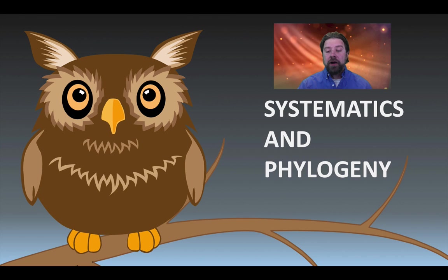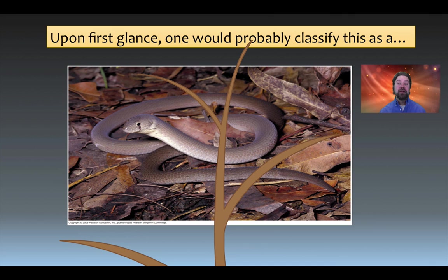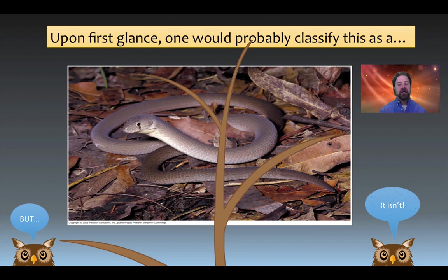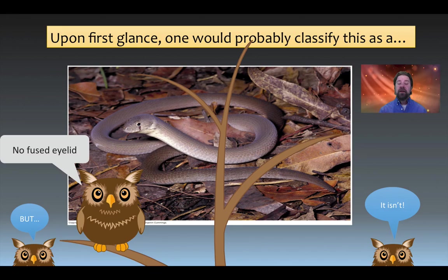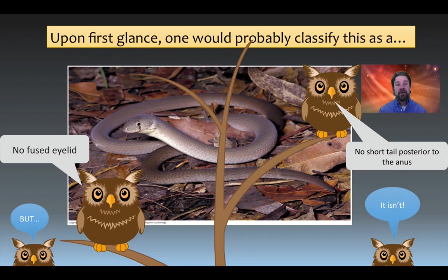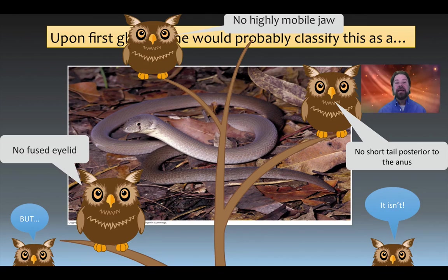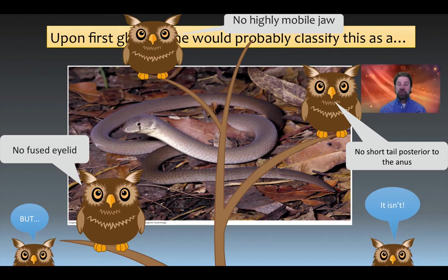Let's take a look at a simple example. Upon first glance one would probably classify this as a snake, but upon closer inspection we find it isn't actually a snake — it is a different species altogether. Key attributes of snakes include fused eyelids, a short structure posterior to the anus, and a highly mobile jaw. This animal doesn't have them, so it's actually what we call a legless lizard. At one time it did have legs, but evolution changed this organism so it no longer needs them.